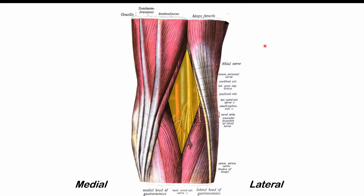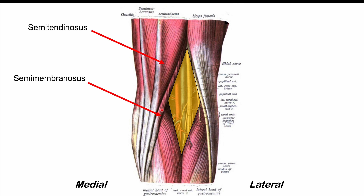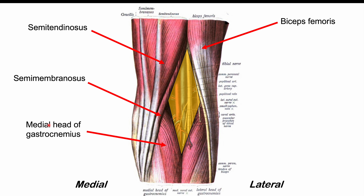Here is the popliteal fossa again. The medial side and lateral side of the leg are indicated. The popliteal fossa is demarcated by several muscles: the semitendinosus muscle, the semimembranosus muscle, and the biceps femoris on the lateral side, which demarcates the lateral edge of the popliteal fossa.